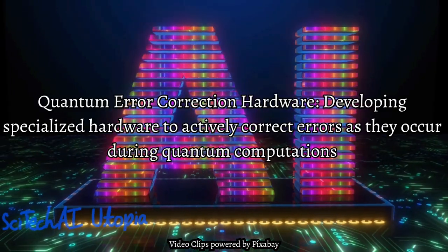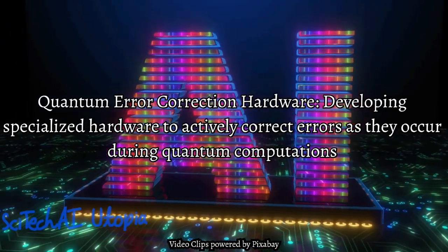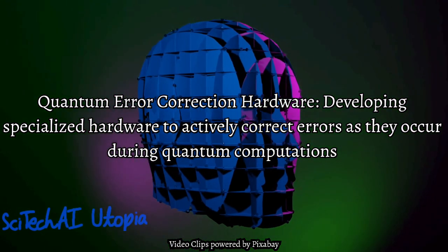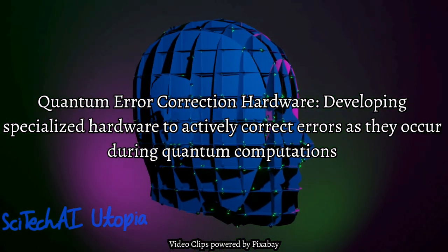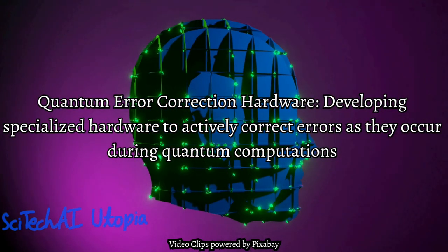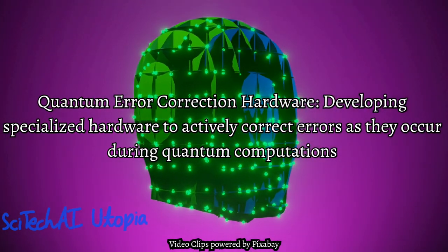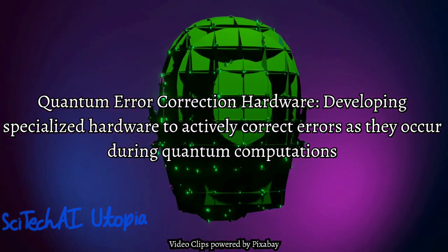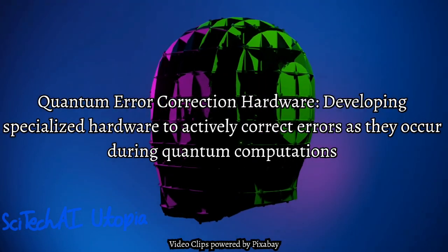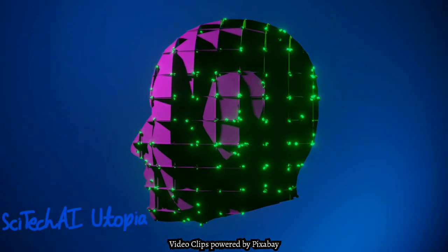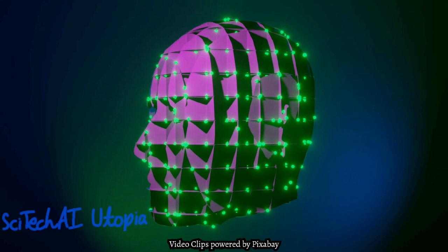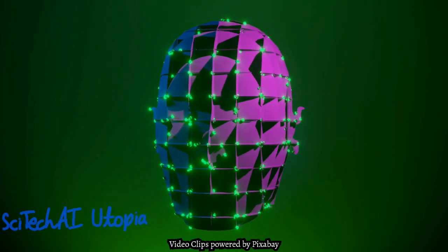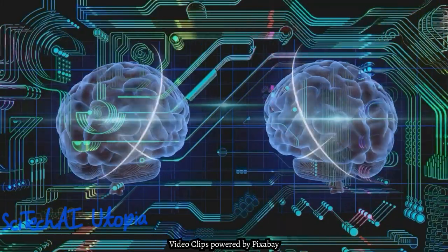Solution 3: Quantum Error Correction Hardware. Quantum error correction hardware involves specialized components to actively identify and correct errors. This may include redundant qubit architectures, ancilla qubits for error syndrome measurements, and error correction circuits. Hardware-level solutions are crucial for real-time correction, enhancing the fault-tolerance of quantum computers.